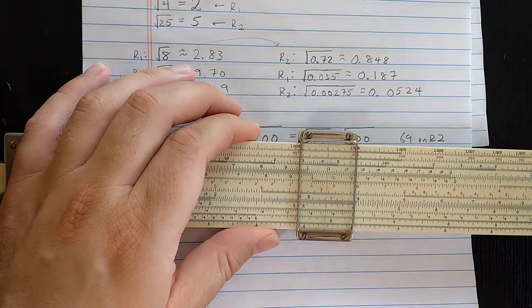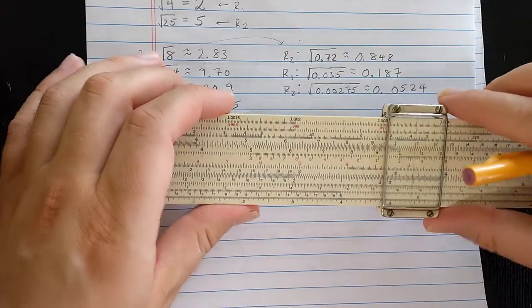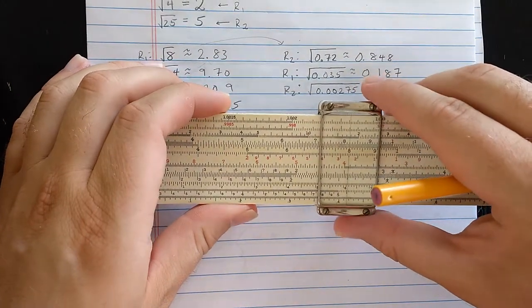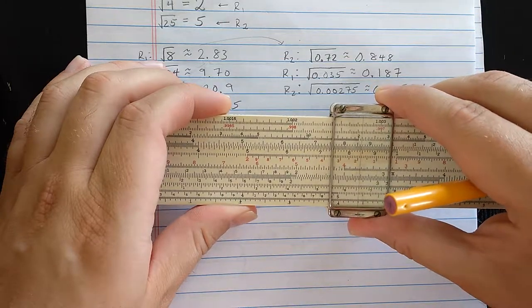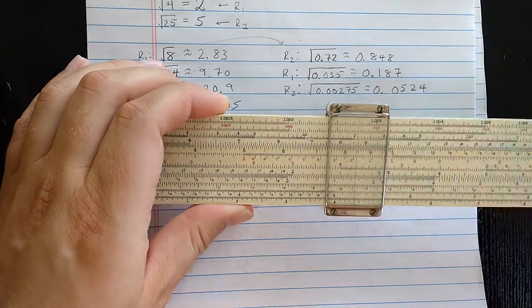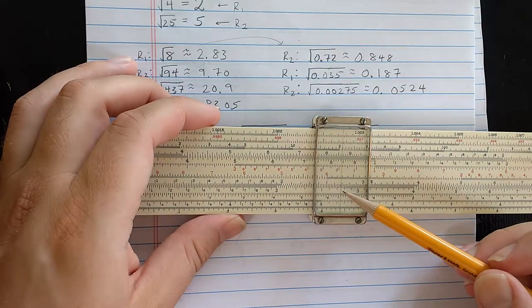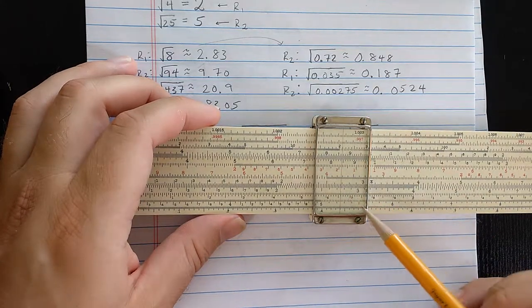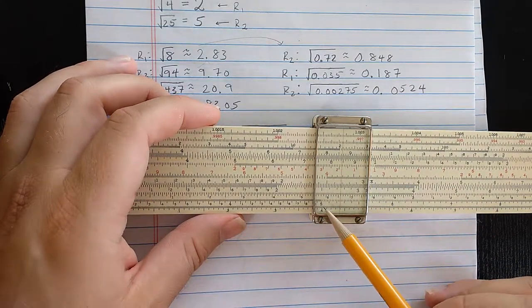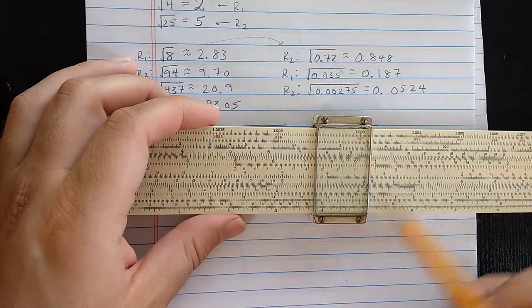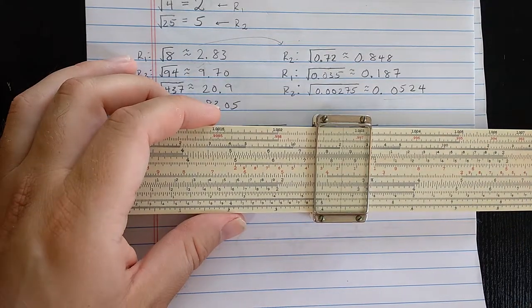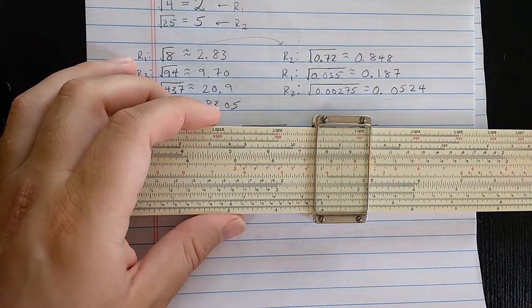And then I move it one more. Or I should read on R2, so let's go to 2, 7, 5. Right about there on D, and then I should read 5, 2, 4. Here's 5, 1, 2, 5, 2, 4. And I'm reading that on R2, and putting the decimal place appropriately.